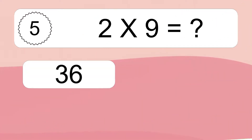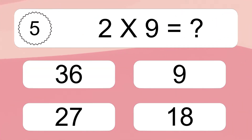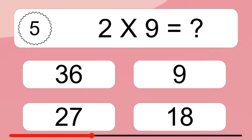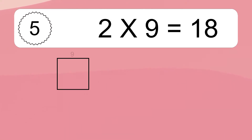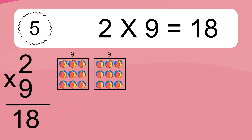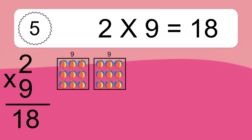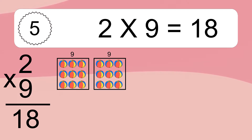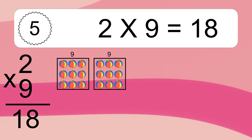Two times nine equals what? Two times nine equals 18. We have two boxes and each box has nine colorful balls inside. If you count all the balls in all the boxes together, you will have two times nine balls. This equals 18 balls.